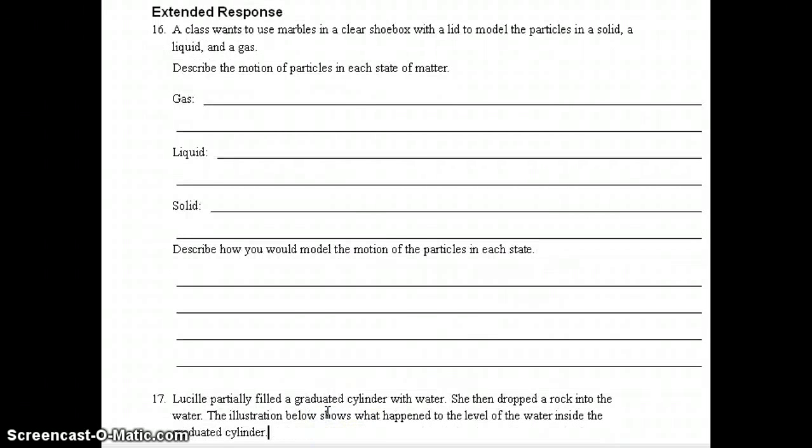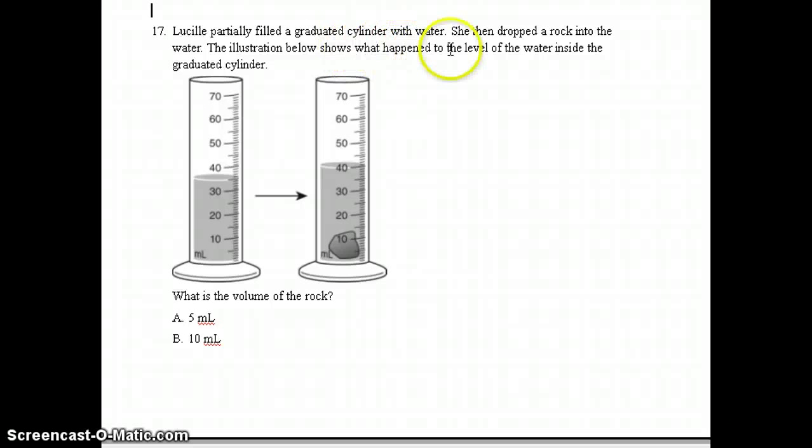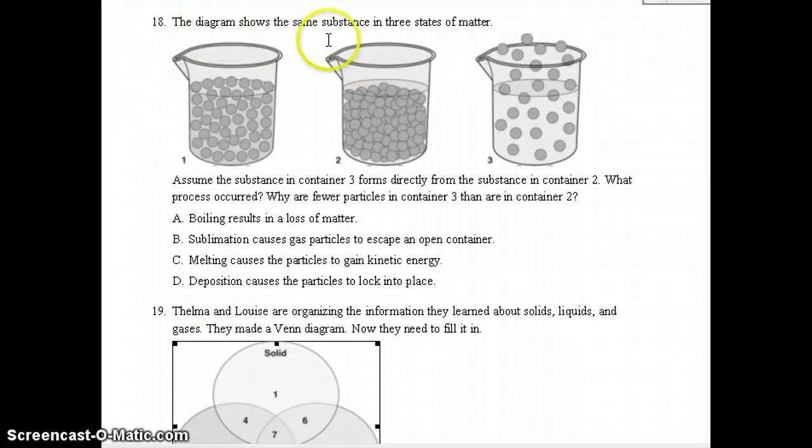Number 17, Lucille partially filled a graduated cylinder with water. She then dropped a rock into the water. The illustration below shows what happened to the level of the water inside the graduated cylinder. Notice it started at 35 milliliters. It went up to 40 milliliters. So what is the volume of the rock? The correct answer should have been letter A, five milliliters. Number 18, the diagram shows the same substance in three states of matter. You can see beaker 1, beaker 2, beaker 3. Assume the substance in container 3 forms directly from the substance in container 2. What process occurred? Why are fewer particles in container 3 than are in container 2? The correct answer should have been letter B, sublimation causes gas particles to escape to an open container. From 2 to 3, solid to a gas, so it would be sublimation.